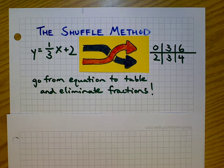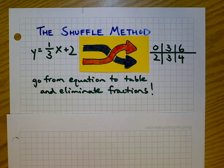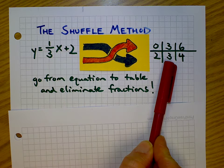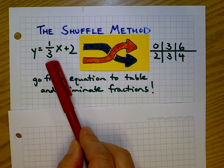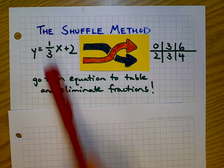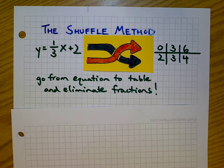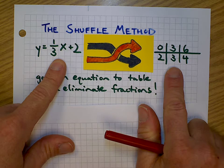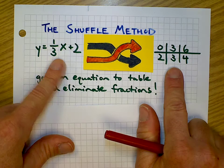Welcome to the Witcher Math Channel. Today we're going to talk about something called the shuffle method. We're working on going from an equation to a table, and sometimes there's a monkey wrench in there called a fraction which throws us off. Wouldn't it be nice if we could just go straight from an equation to a table and not worry about the fraction?